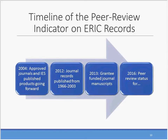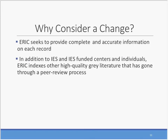I would now like to turn the presentation over to Erin Pollard to talk about why we're considering the change to the policy and what it will mean to users. So to begin, why are we proposing this change? ERIC currently extends the peer review flag to some types of records and not others. This is creating user confusion. We want to provide the most complete and accurate information possible, so we looked at ways to clarify this.